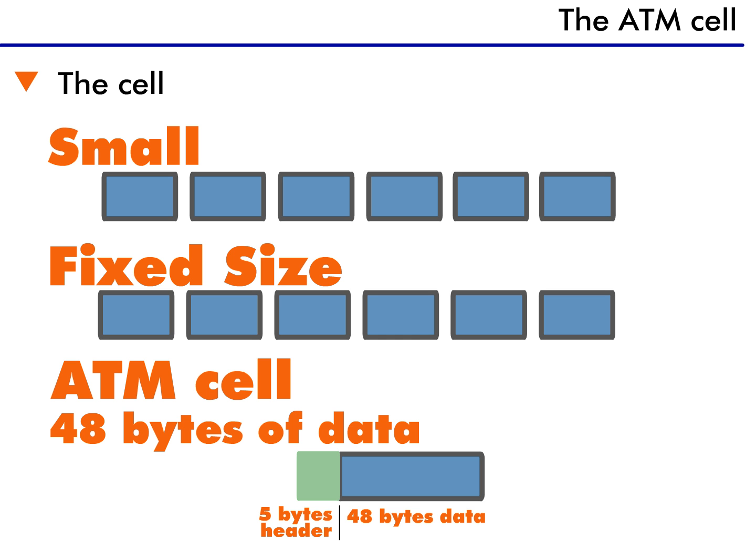The first part of the definition is small. Small cells reduce the delay of other traffic that is waiting for access to the network. If the cells were large, then the delay we talked about in our first train scenario would still occur, even with ATM.